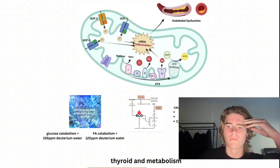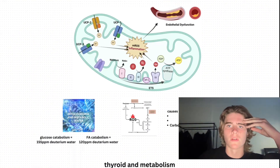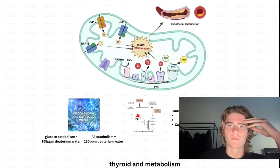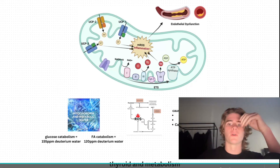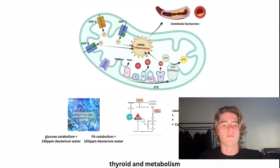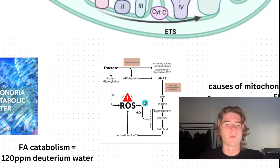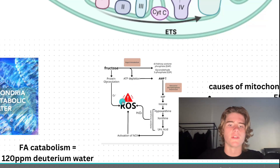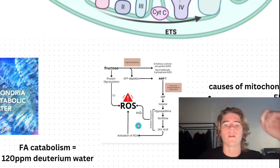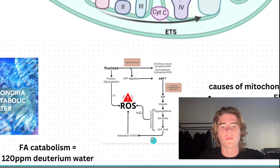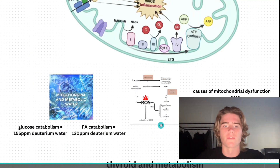Disrupted light signals from melatonin also play a role. And there are a couple of ways carbohydrates cause damage — first would be fructose. This is how fructose is metabolized in the liver: it basically depletes ATP, causes reactive oxygen species to synthesize, leading to oxidative stress and uric acid production, which is quite stressful for the mitochondria.